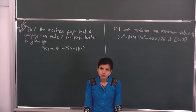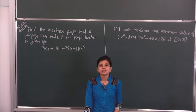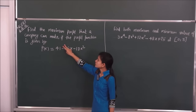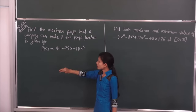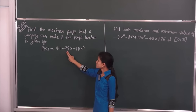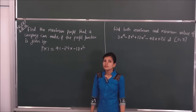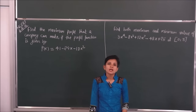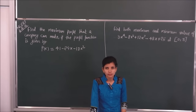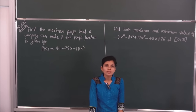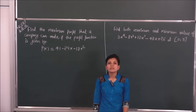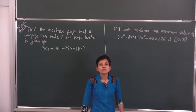Maxima and minima से related हम NCERT exercise 6.5 के कुछ questions देखते हैं। 6th question हमें दिया हुआ है: Find the maximum profit that a company can make if the profit function is given by P(x) = 41 - 24x - 18x². यहाँ पर एक company का profit function दिया हुआ है और इस profit function से हमें maximum profit find करना है। Maths के language में देखें तो हमें इस function का maxima find करना है।